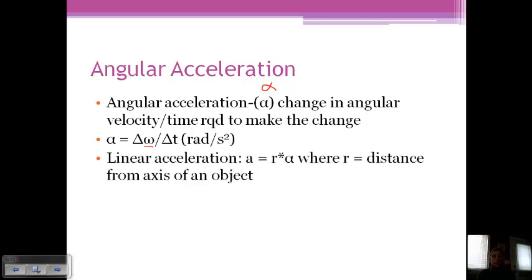We can relate this to linear acceleration. So A here represents our linear acceleration. And this is equal to R times our angular acceleration, where R is the distance from the axis. So very similar to the radius.